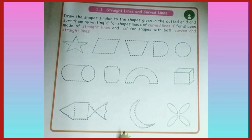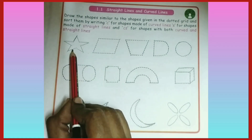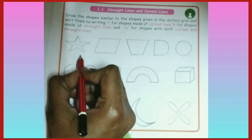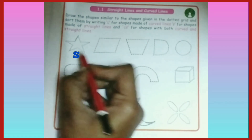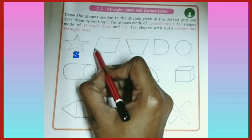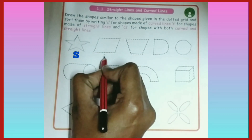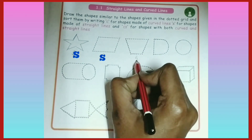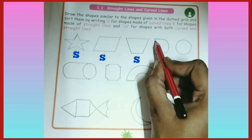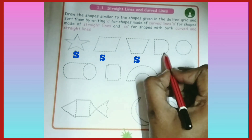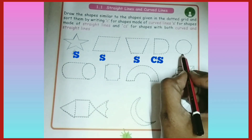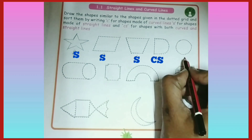Let us identify the shapes. Here we have only straight lines, so write S. The second one also has straight lines, so write S. Third one, straight lines. Fourth one has straight line and curved line, so CS. Next, curved lines - write C.